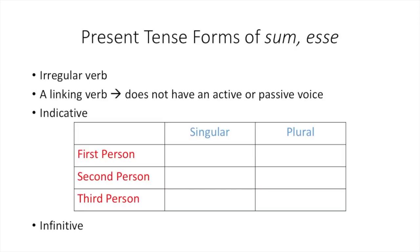In fact, you've already seen this linking verb: est. And est is one of your forms of sum esse. So let's talk about your verb sum esse. It's a linking verb, so it does not have an active or passive voice. It is also an irregular verb, so you need to memorize all of its forms. The forms you'll need to know are the indicative and infinitive forms. We will also only focus on the present tense for now. Just like other verbs, you get two forms from your dictionary entry. Sum is your first person singular present indicative form, and esse is your present infinitive.